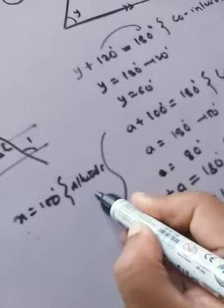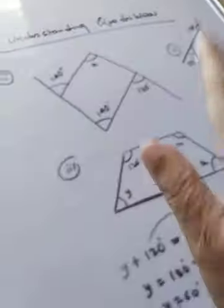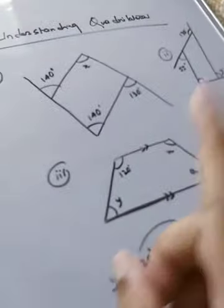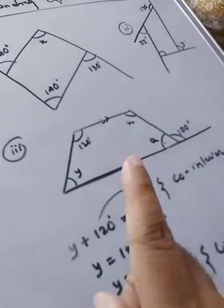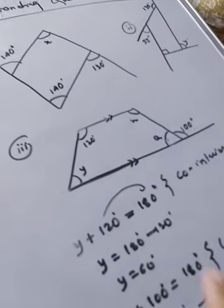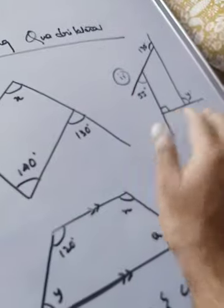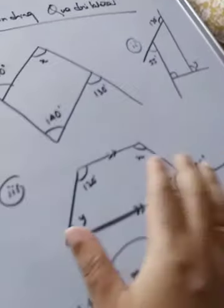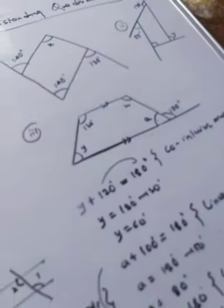Today's assignment: these three sums — draw the figure first and then write the solution. Without drawing the figure, I will not accept the work. Draw figure one then its solution, figure two then its solution, figure three then its solution. Thank you and take care.